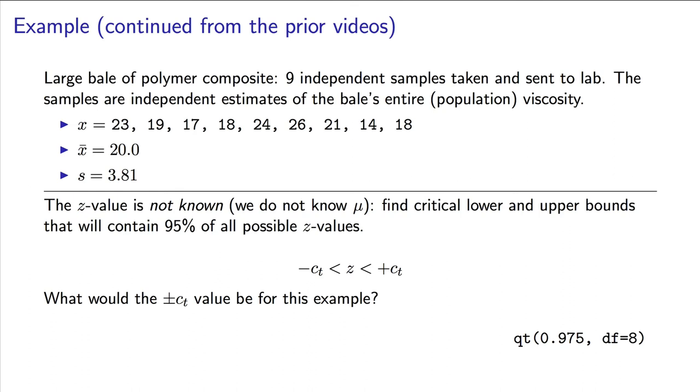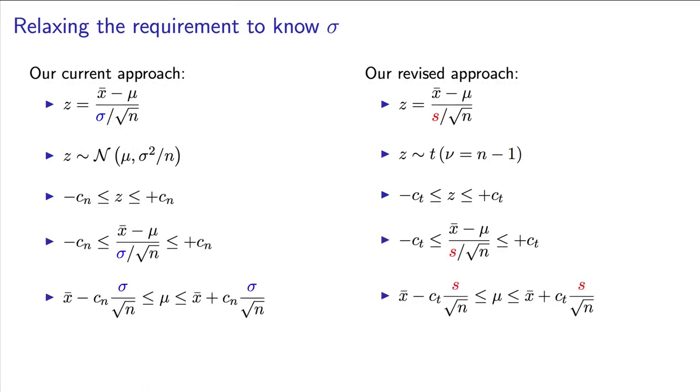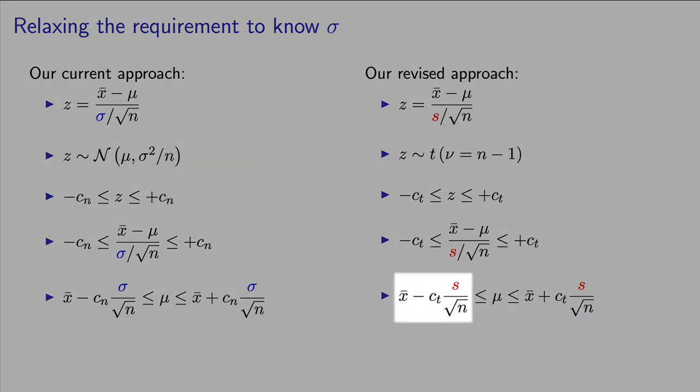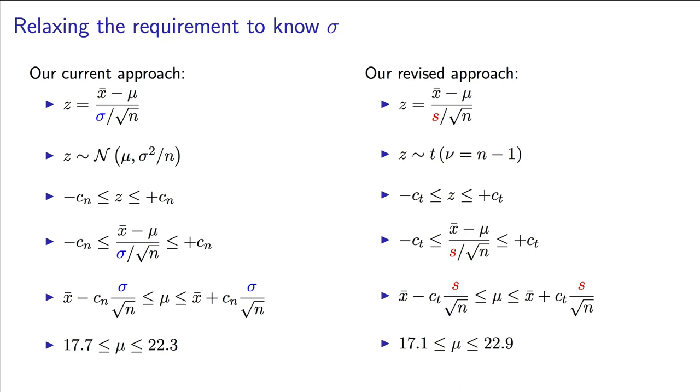Now substitute, as we did in the prior video, the equation for z. Rearrange the inequality, leaving the parameter mu in the middle. This gives a lower and upper bound. We know all the terms in here. The x-bar and s-values are calculated, the c_t values are ±2.3, and the number of samples is 9. Subbing in those numbers gives bounds of 17.1 and 22.9. That gives us bounds that we have a confidence of 95% of containing the true mean.